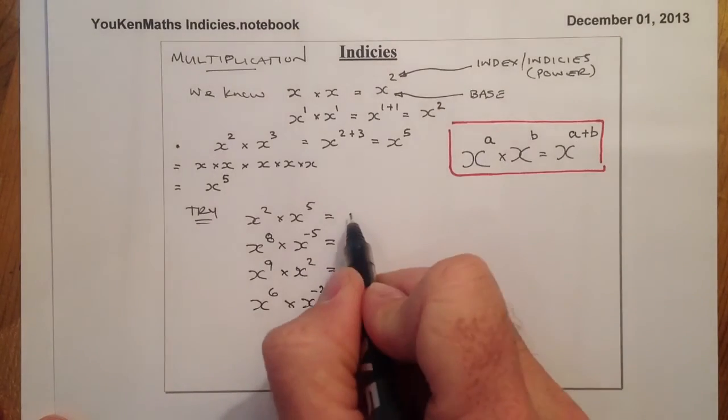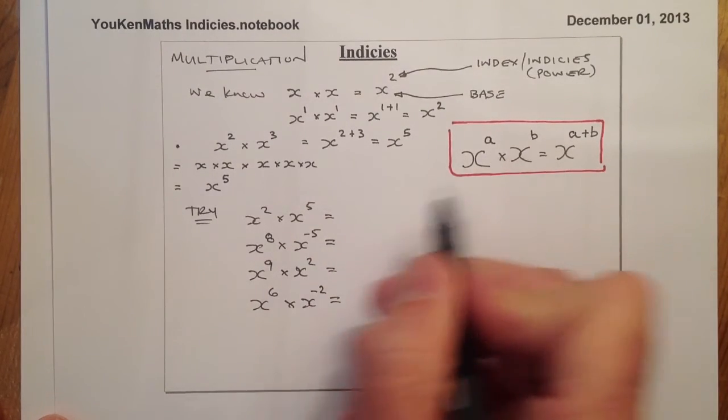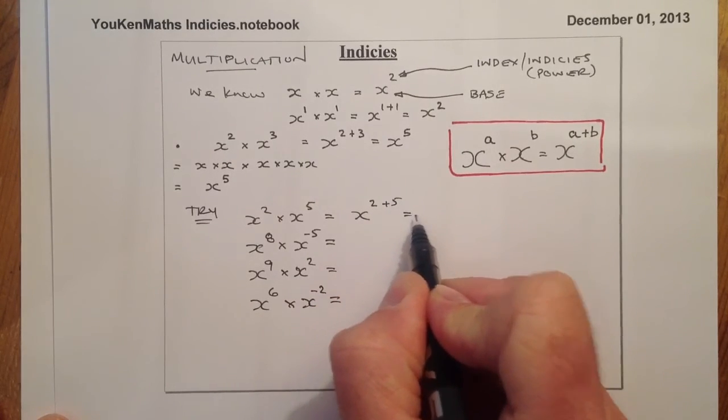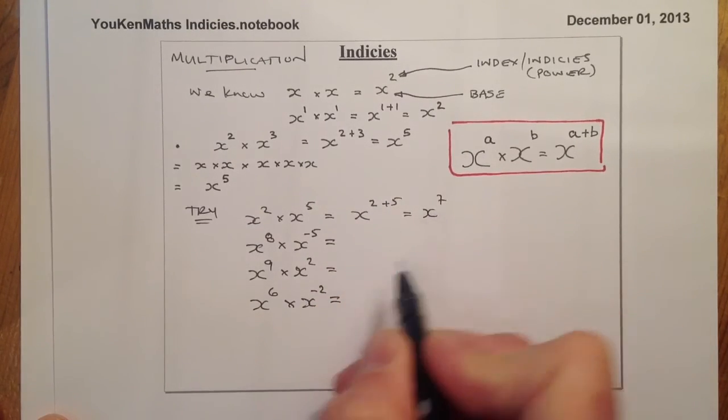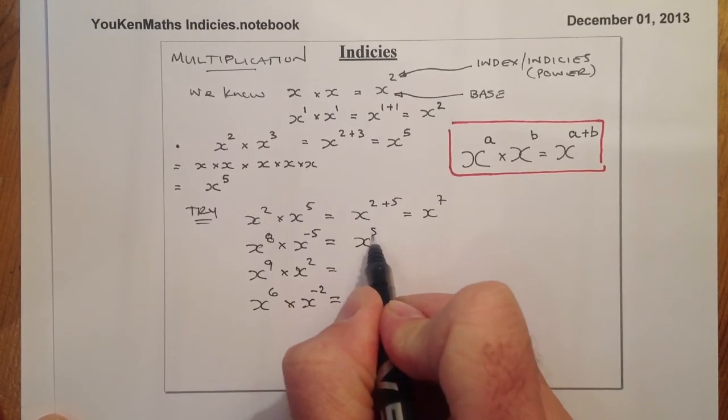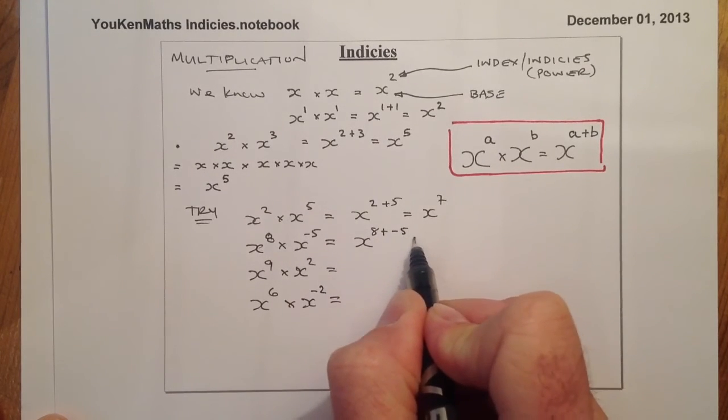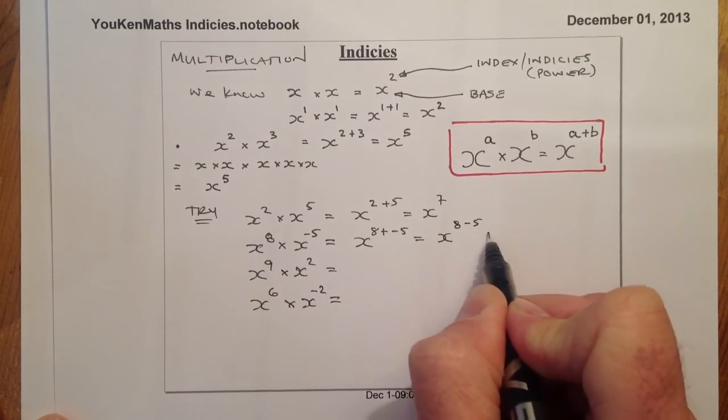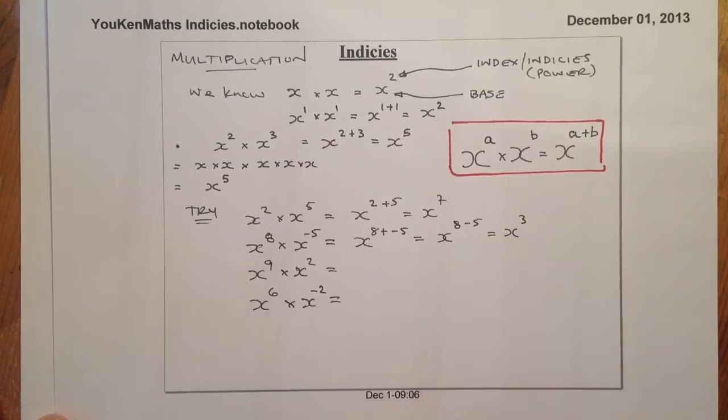Right, the answers to these would be, so I'm going to use this law or this rule. So I've got x to the power of 2 plus 5 is going to be equal to x to the power of 7. x to the power of 8 plus a minus 5, so remember that's just going to be the same as minus 5. So that's going to give me x to the power of 3.